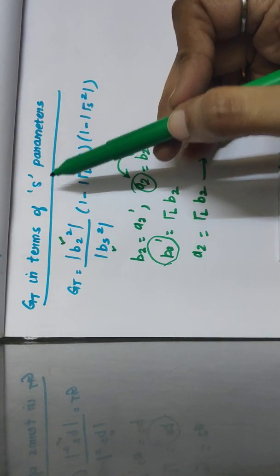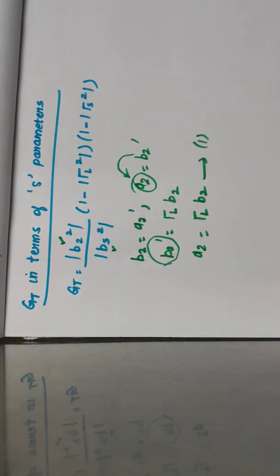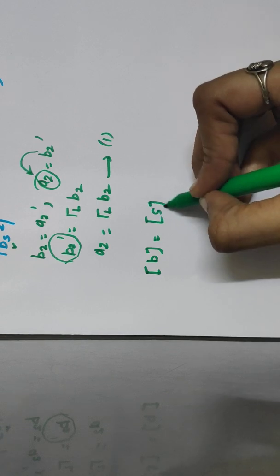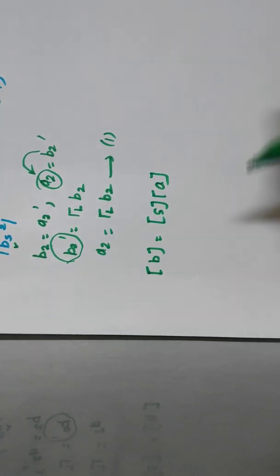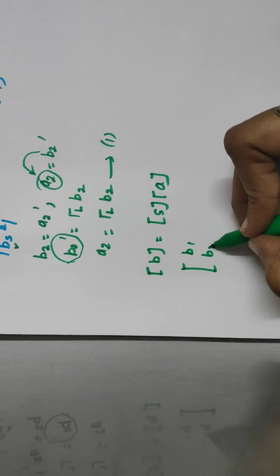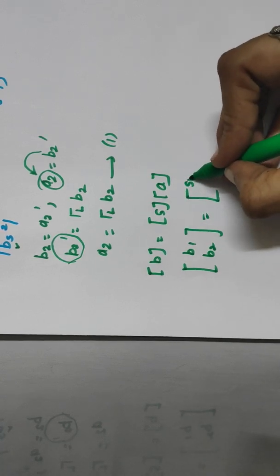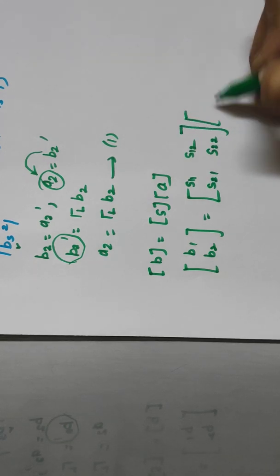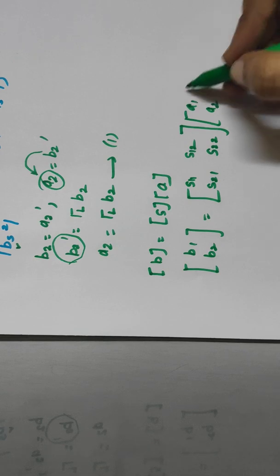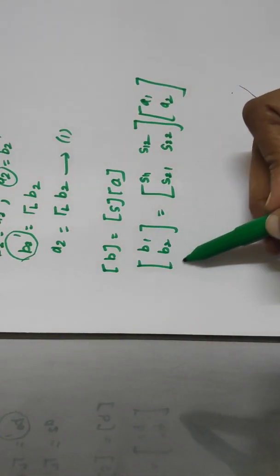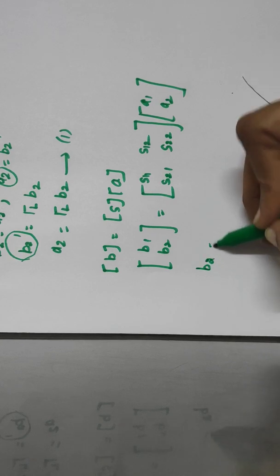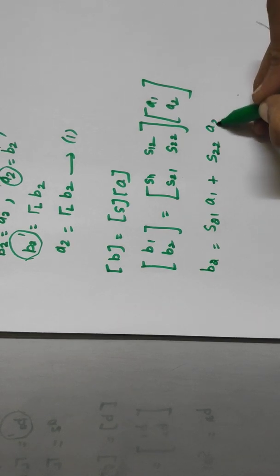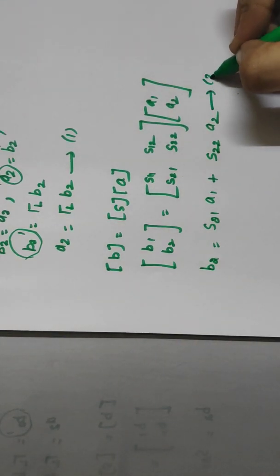Now we are deriving in terms of S parameters. For a two-port network, the S parameter equation is B = S · A. So we write [B1, B2] = [[S11, S12], [S21, S22]] · [A1, A2]. We are concerned about B2, so the second equation is: B2 = S21·A1 + S22·A2. Let this be equation number 2.